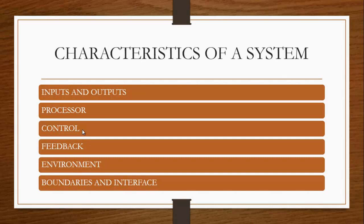The last characteristic we shall look at today is boundaries and interface. Boundaries are limits that identify a system's components, processes, and interrelationships when it interfaces with another system. Each system has boundaries that determine its sphere of influence and control. There must be a limit or boundary as the system interfaces with other subsystems. So the characteristics of a system are: inputs and outputs, processor, control, feedback, environment, and boundaries and interface.